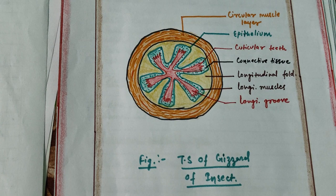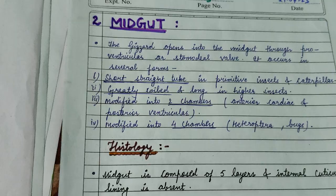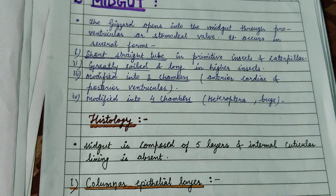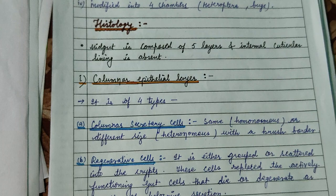The gizzard consists of six cuticular teeth made of connective tissue, circular muscle layer, longitudinal muscle layer, and more. The midgut is the part where digestion mainly occurs. The gizzard opens into the midgut through the proventricular or stomodeal valve, and it occurs in several forms — a short straight tube in primitive insects, while greatly coiled and long in higher insects.